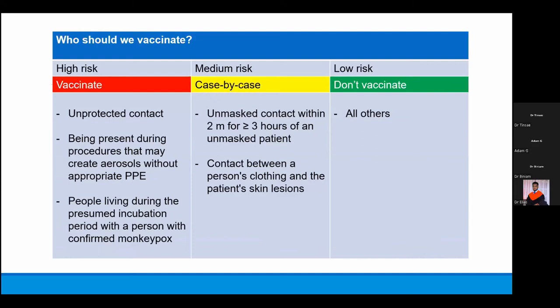Who should be vaccinated? The highest risk group is those with unprotected contact, those present during aerosol-generating procedures — respiratory or gastrointestinal — in ICUs, or people living during the presumed incubation period of about 6 to 13 days with a confirmed monkeypox patient. Medium risk — for whom case-by-case decisions can be made — includes unmasked contacts within 2 meters for 3 or more hours of an unmasked patient, or contact between a person's clothing and the patient's skin lesions. For all others, vaccines are not indicated.